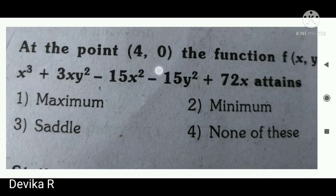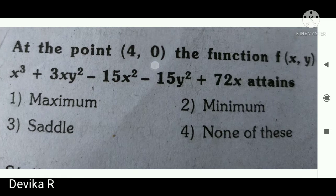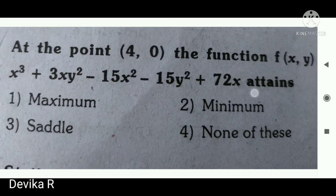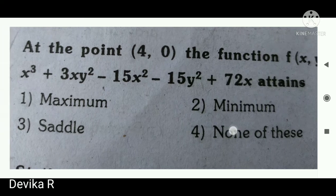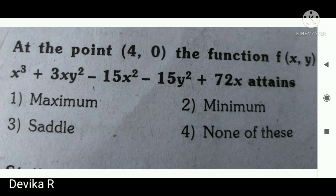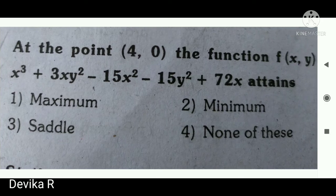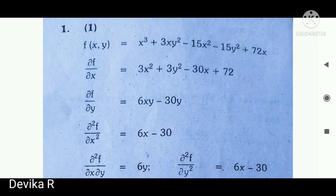Let's see one example to get a clear idea. The given point is (4, 0), which is our (a, b). The function f(x, y) = x³ + 3xy² − 15x² − 15y² + 72x. We need to determine whether the function attains a maximum, minimum, saddle point, or none of the above at that point.